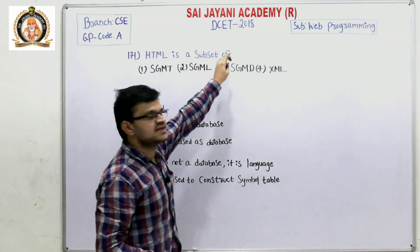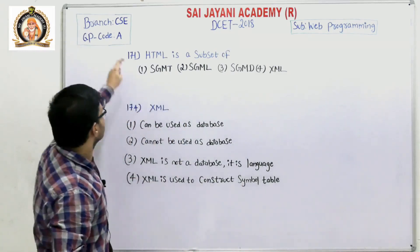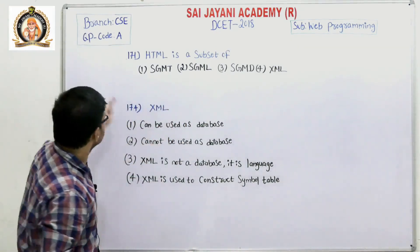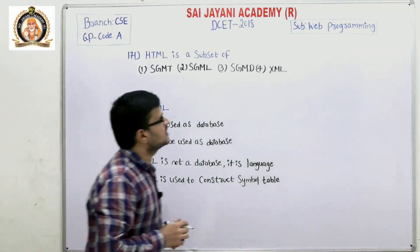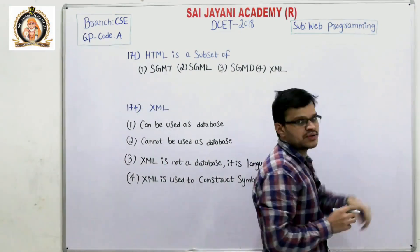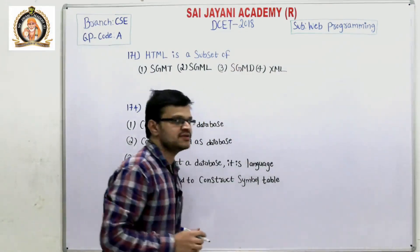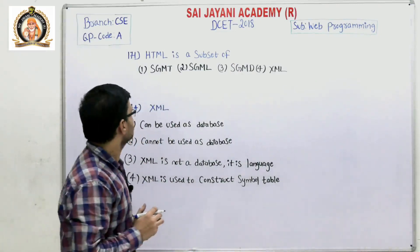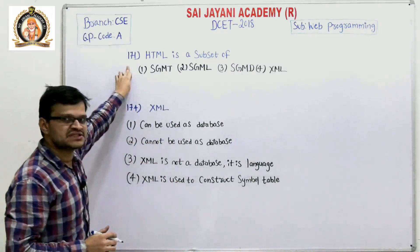For the same DCT 2018 under the branch Computer Science and Engineering, the question paper code is A. This time I selected the subject Web Programming. In DCT 2018, they asked 10 questions. Question number 171: